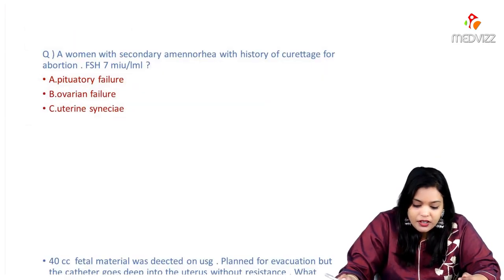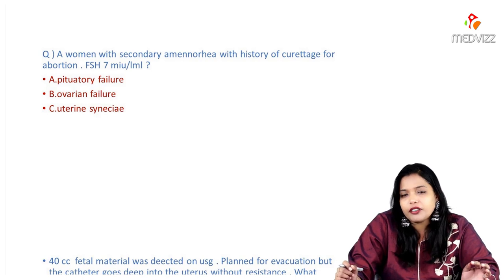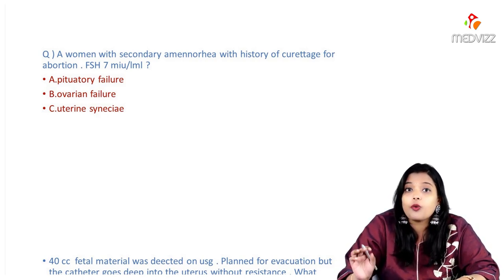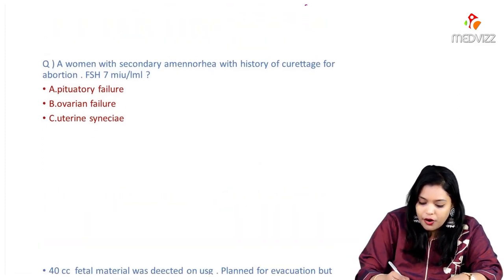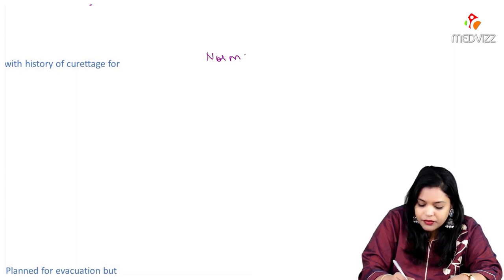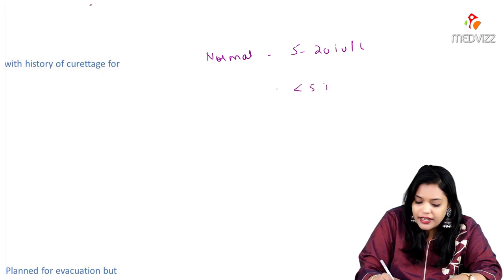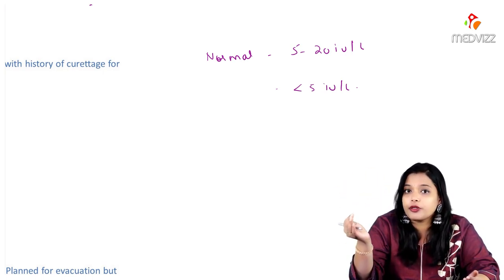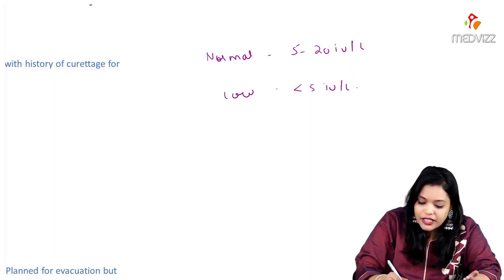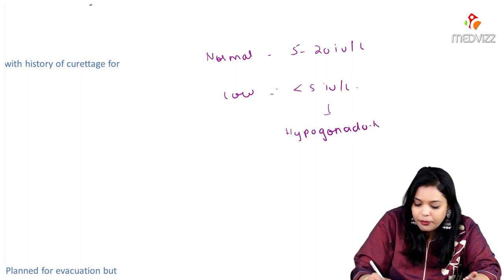The second question: a woman with secondary amenorrhea with history of curettage for abortion; FSH is 7 micro international units per ml — what is your diagnosis? This is a repeat question. The very important clue is the FSH level. You should know what is normal FSH, when is it high, and when is it low.